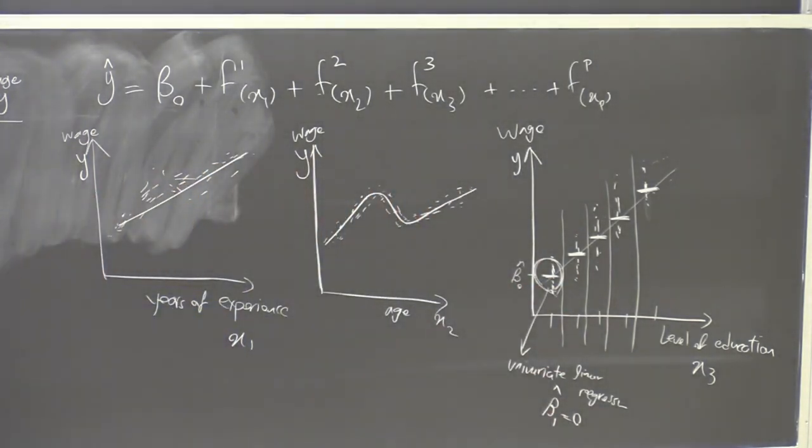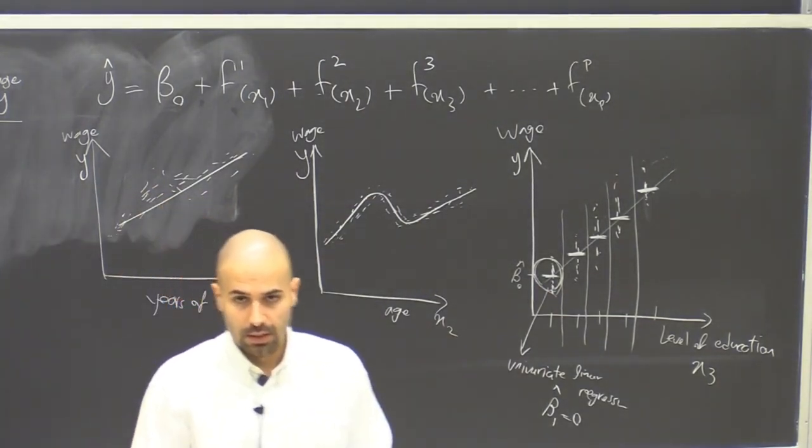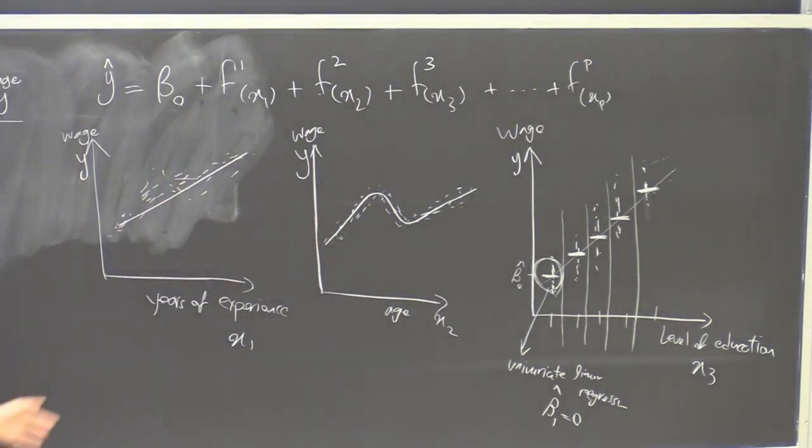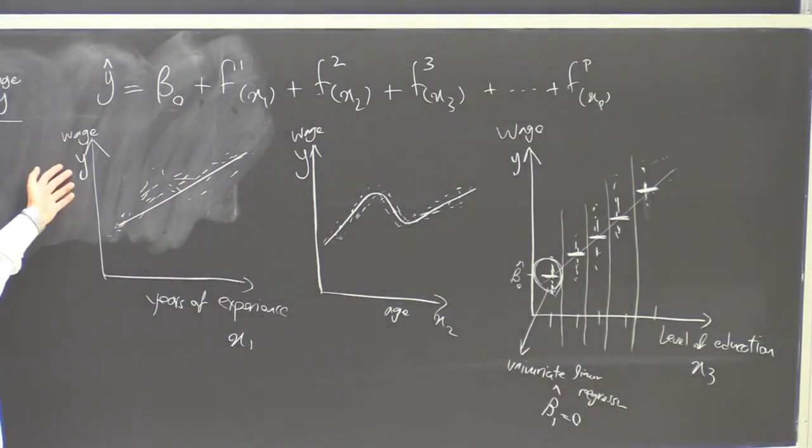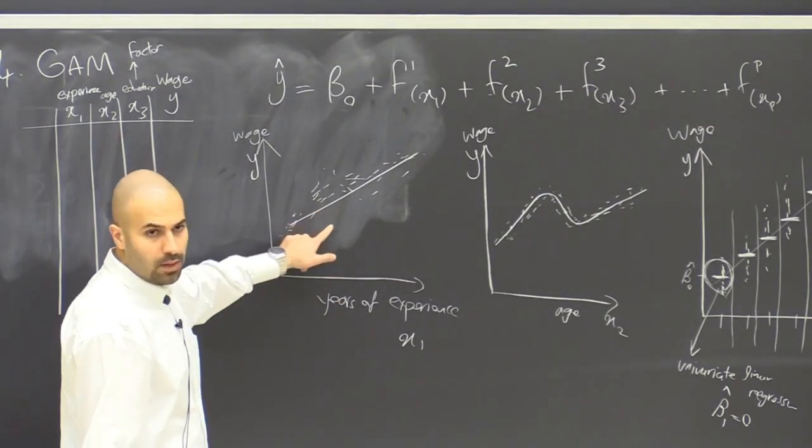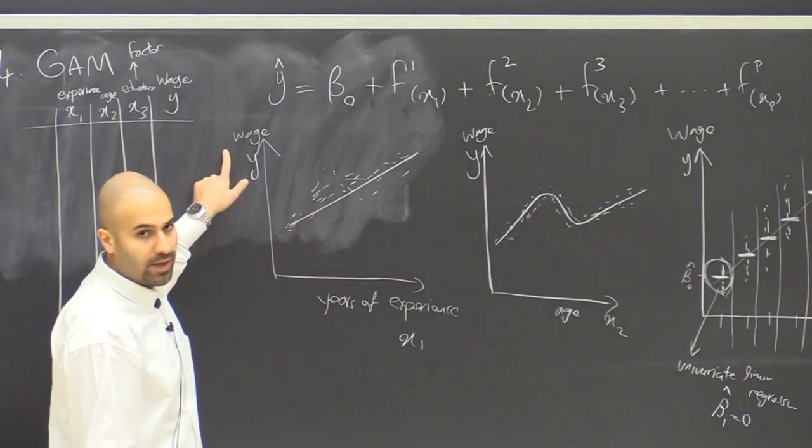So we can have something like this, which is very interpretable. In terms of explainability, this is something that can be explained very easily. We say years of experience has a direct impact on wage. So for every single additional year of experience, we're going to have some beta 1 hat increase of wage.